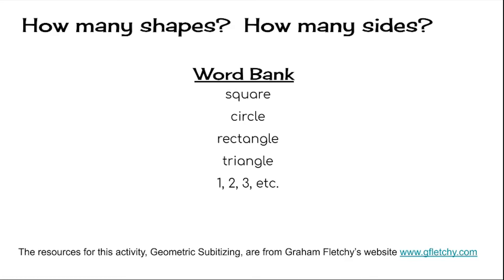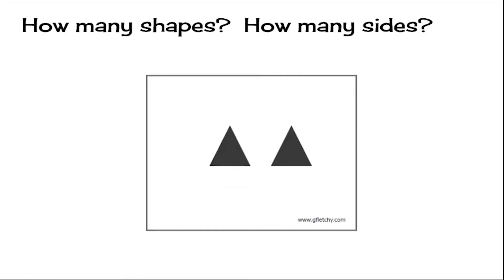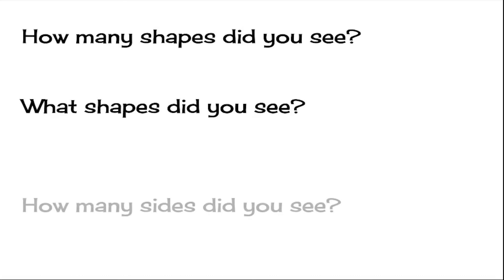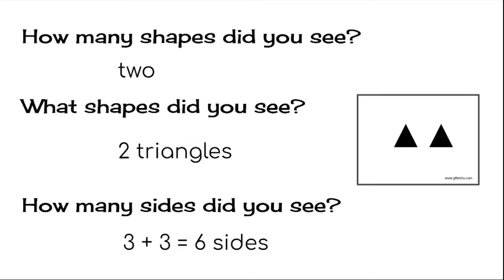Here's the first one — get ready. How many shapes did you see? And what shapes did you see? And how many sides? Well, on this card, there were two shapes. They were both triangles. So if we talk about sides, it's three on each triangle. Three plus three equals six sides.